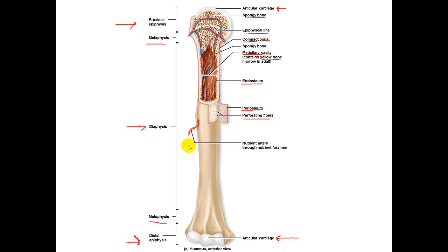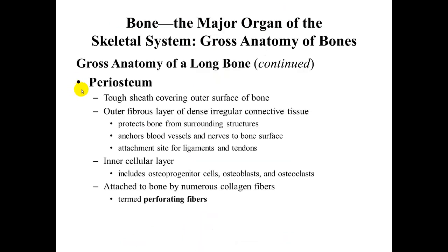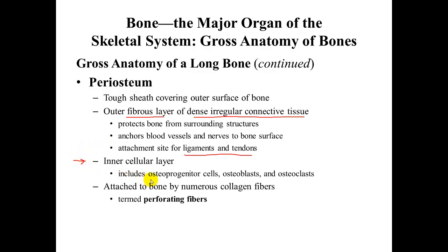Arteries enter and exit the bone through nutrient foramina — holes in the outer covering of the bone. The periosteum is a tough sheath covering the outer surface of the bone. It has an outer fibrous layer of dense irregular connective tissue that allows it to provide strength in all directions. It protects the bone from surrounding structures. Blood vessels and nerves help anchor to the bone surface, and it's the attachment site for ligaments and tendons. That is one of the reasons it is so difficult to pull a ligament or tendon off of the bone — you'll typically pull a piece of bone with it. It does have a cellular layer containing osteoprogenitor cells, osteoblasts, and osteoclasts.